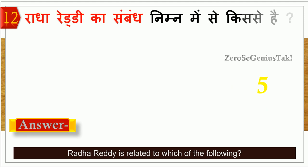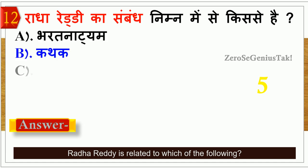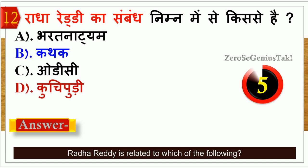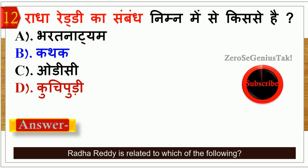The next question: Raja Reddy is related to which of the following options? The right answer is option number D — Kuchipudi.